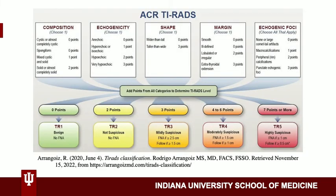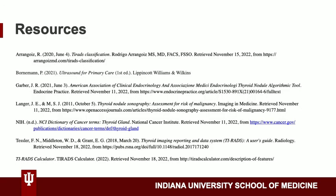After you tally up the total score, go to the bottom of the graphic and determine the next best step in management. If the lesion has two or less points then no FNA is needed. If there are more than two points, the nodule will need an FNA if it meets certain size requirements. Thanks for watching this video.